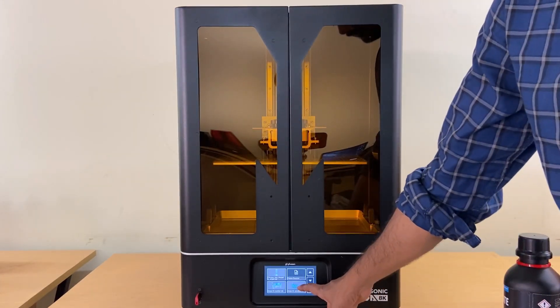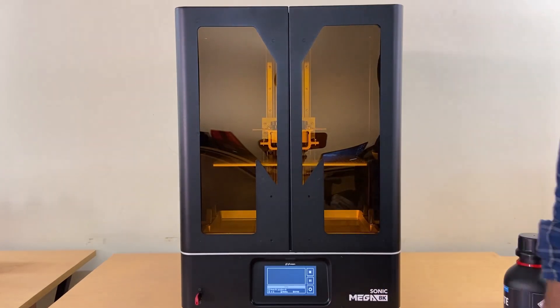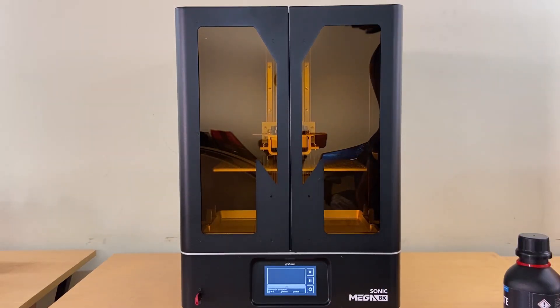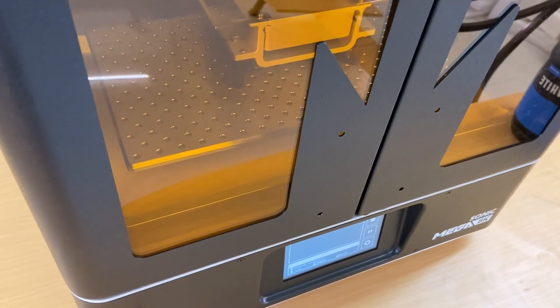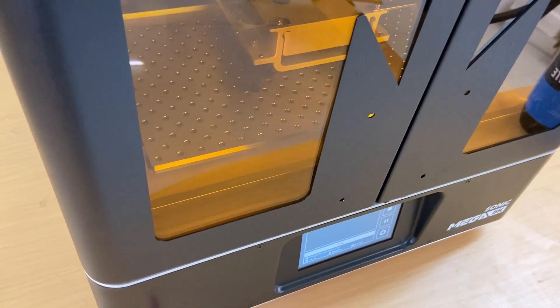Sonic Mega 8K building plate will be calibrated perfectly before they are shipped, which means that all you need to do is take your device out of the box and you're all set to begin printing.